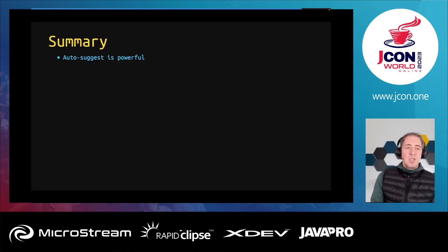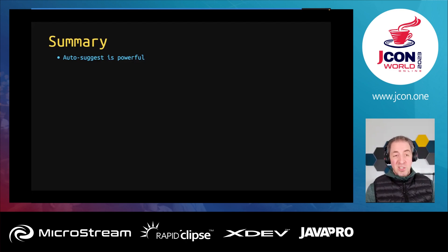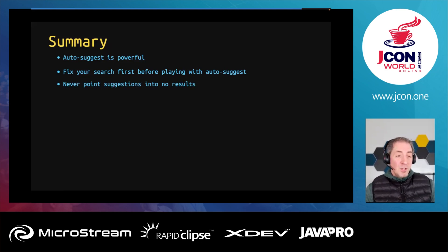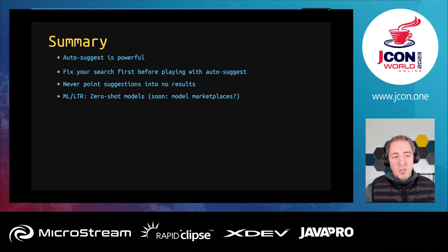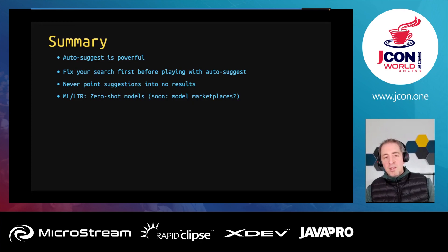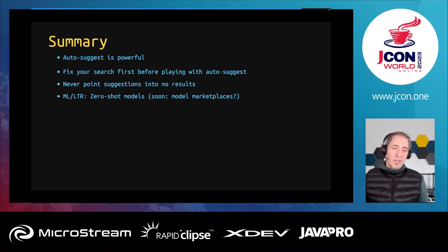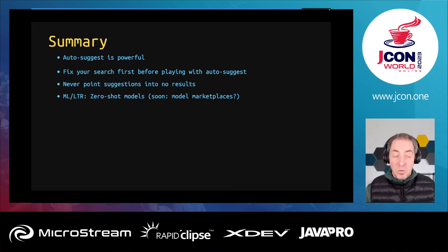That leaves us with a summary. Autosuggest is super powerful, but search is more important if you have a search engine behind it. You should never point to suggestions that lead to no results — this removes trust in your product. If you use learning to rank or machine learning, we'll likely see an explosion of models in coming years, including model marketplaces that take broader context into account — like which clothes were worn at fashion weeks — where large language models will probably shine.